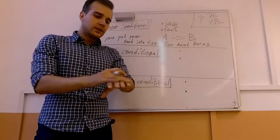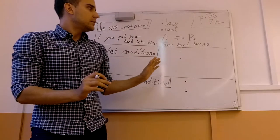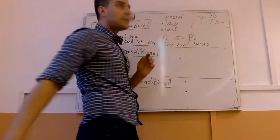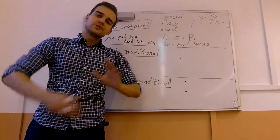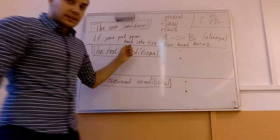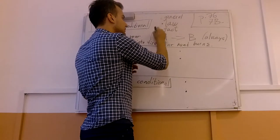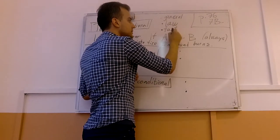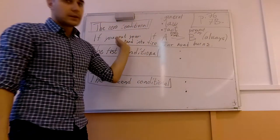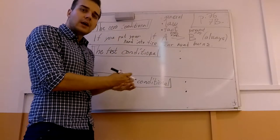There is not a situation where you put your hand into fire and it doesn't burn — maybe if you have some gloves or protection you will be okay, but we are talking in general. The structure is: A is present simple and B is present simple. If A, then present simple; B, present simple. It's about the general rule or fact that if A happens, B always happens too.